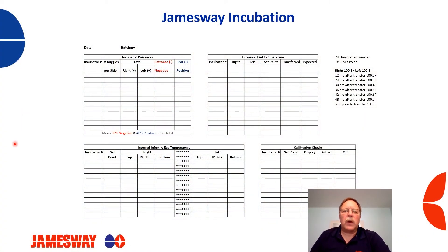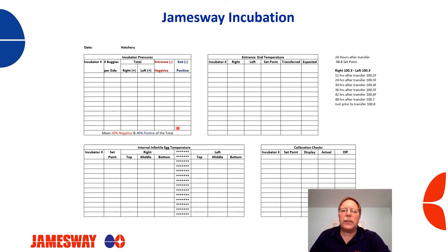Now that we're back in the office, one of the things we need to look at is the data from the hatchery that's been collected. On this worksheet, we've got an area for incubator pressures, which we've talked about in a previous training video, our entrance end or crossbar temperatures, our internal infertile egg temperatures, and our calibration checks. All that information should be recorded on this sheet.